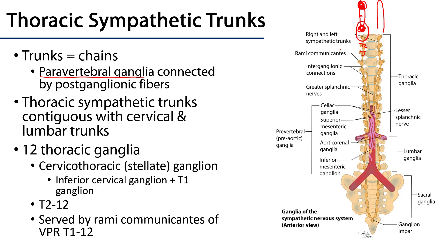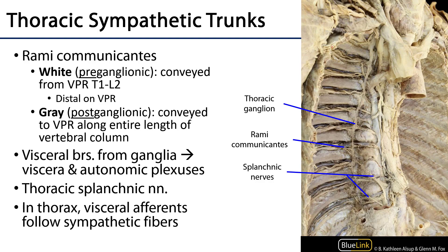These ganglia communicate with the ventral primary rami via rami communicantes, which are communicating branches. Rami communicantes come in two types. There are white rami communicantes, which conduct pre-ganglionic fibers from the ventral primary ramus out to the ganglion. There are also gray rami communicantes, which conduct post-ganglionic fibers from the ganglion back to the ventral primary ramus.